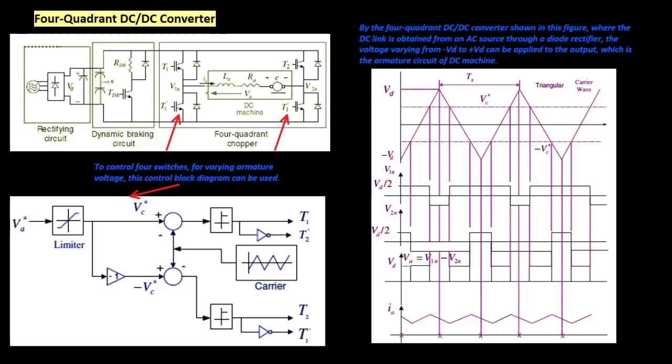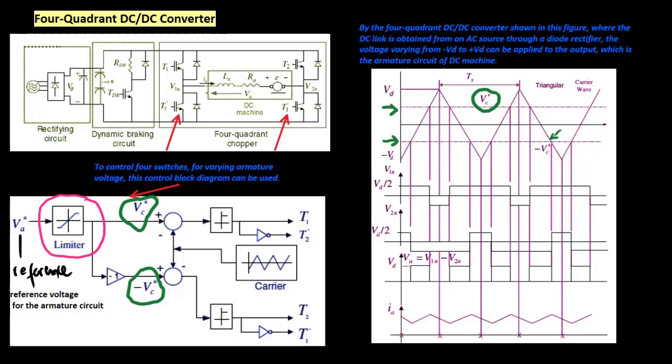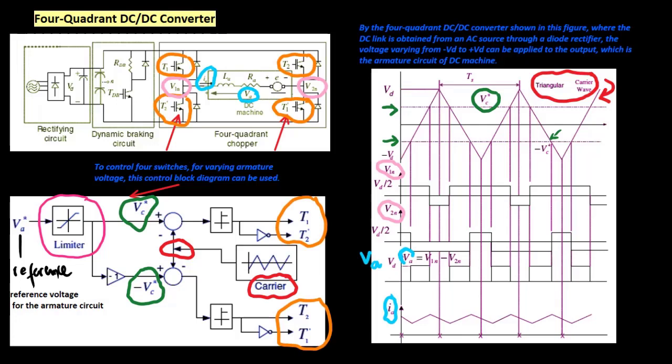If the reference voltage for the armature circuit VA* is given, the voltage is limited within the allowable control range, which is usually the minimum value of the DC link voltage, through the limiter. The output of the limiter VC* is compared with the triangular carrier wave whose frequency is the switching frequency of the DC-DC converter. Through this comparison, the switches are turned on or turned off.